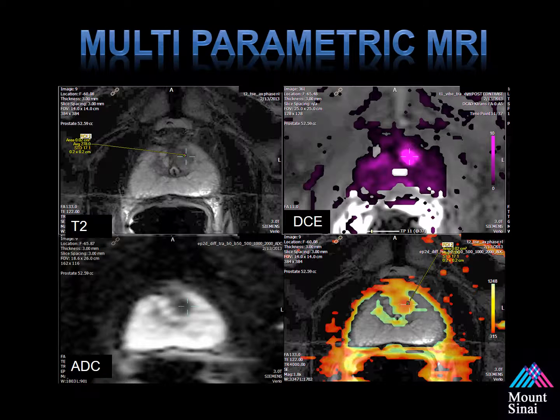This is an example of the case shown earlier, with the remaining sequences displayed here. In the upper left corner is the T2-weighted sequence. On the right is dynamic contrast-enhanced MRI — a color overlay showing increased uptake in the left anterior lesion. In the lower left corner is the ADC map — apparent diffusion coefficient — which shows an area of restriction as dark signal. On the right is a color map outlining the ADC values within the lesion.